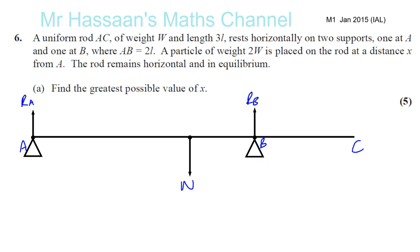I'll call that Ra and I'll call that Rb. Now, a particle of weight 2W is placed on the rod at a distance X from A. The rod remains horizontal and in equilibrium. Find the greatest possible value of X. So if we put a weight somewhere between A and B, this thing is going to still be in equilibrium. It's not going to tilt or turn. Anywhere between A and B, there will be no turning effect happening because those will be acting upwards, these will be acting downwards. There won't be any turning effect.